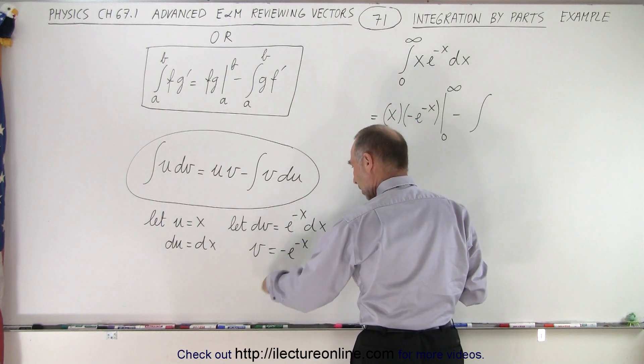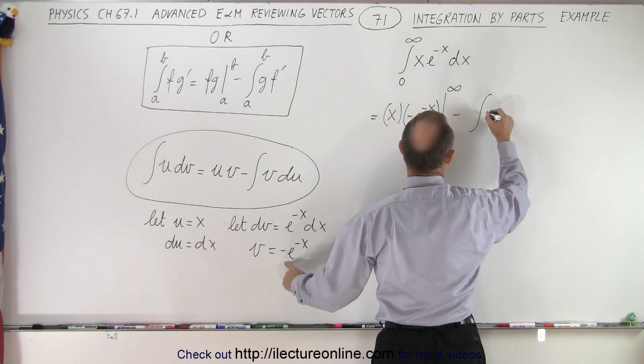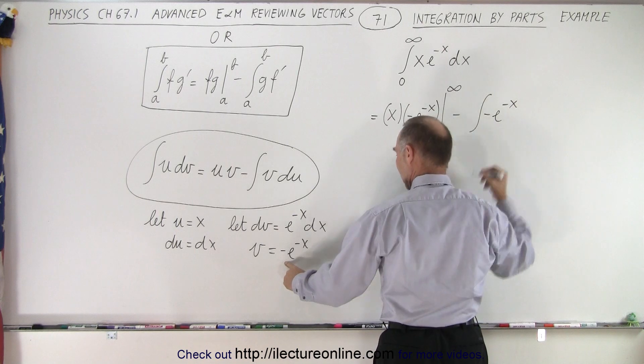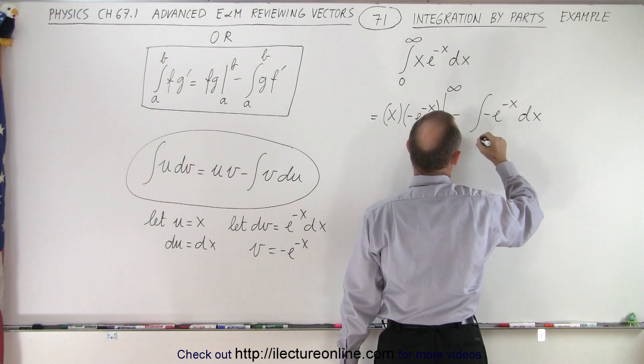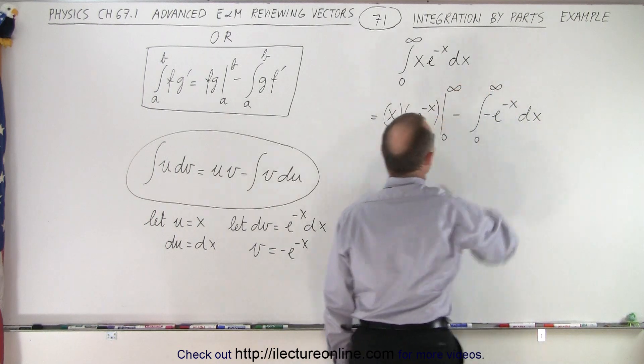Now v was here, so it would be a minus e to the minus x and then a du was a dx. And notice that this is a whole lot easier to integrate than what we started with.